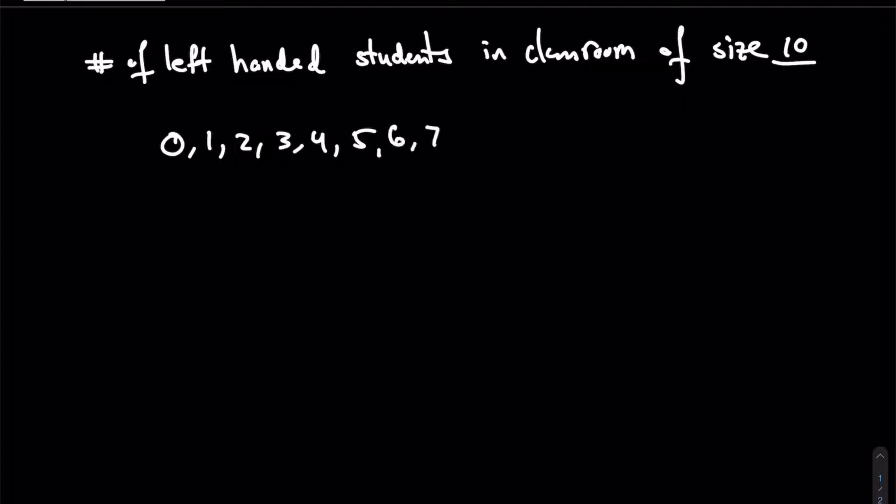For example, if we're talking about the number of left-handed students in the classroom, in a classroom of size 10, that's a nice number to always use, then if I told you what is the total different number of left-handed people you can have in this class, you could say 0, 1, 2, 3, 4, 5, 6, 7, 8, 9, or 10. So any one of these numbers could represent the number of left-handed people in a class of size 10. There are 11 such items. It's always one more because of that 0.